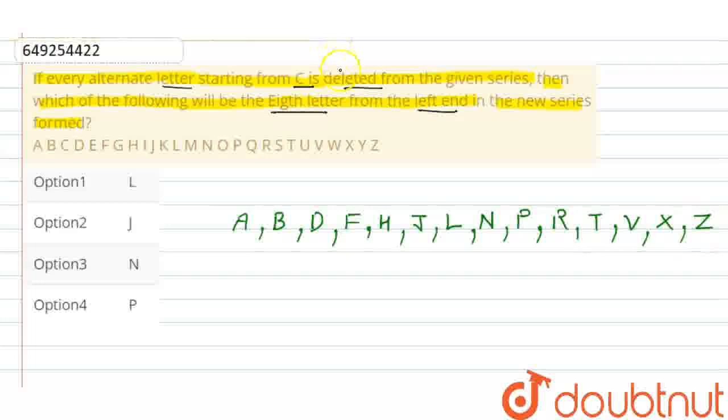Now we have to find the 8th letter from the left end. This will be our left end, and this is right. We count from the left: 1, 2, 3, 4, 5, 6, 7, 8. That is N. So this is our answer. If we check option 3, that is N.